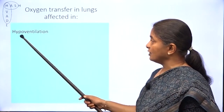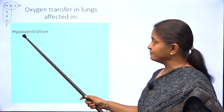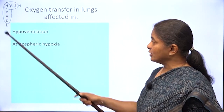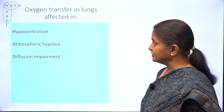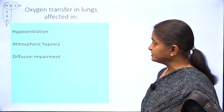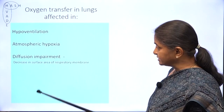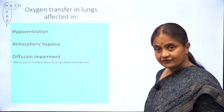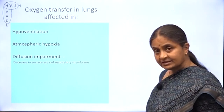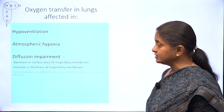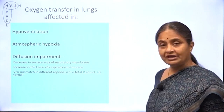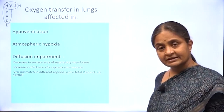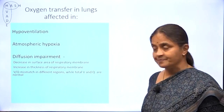V stands for ventilation impairment or hypoventilation; A for atmospheric hypoxia; D for diffusion impairment. Diffusion impairment occurs when there is a decrease in surface area of the respiratory membrane, an increase in thickness, or a condition called VQ mismatch, which we shall be seeing in greater detail in a later lecture.